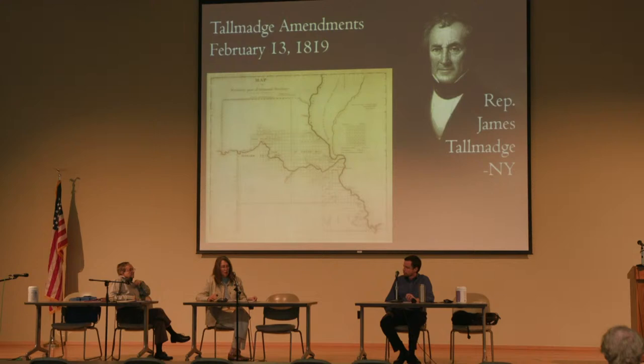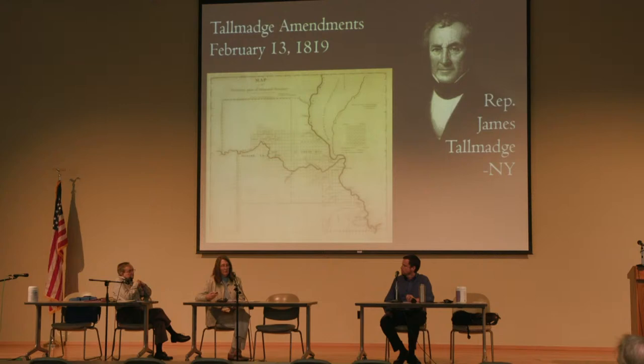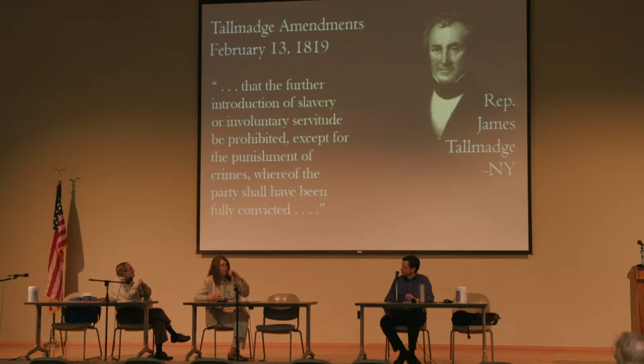Talmadge is the one who really throws a wrench into what had been up to this point a relatively simple process for a state to come into the Union. This map shows Missouri just prior to statehood, probably around 1816 or 1817. When Missouri's request came to Congress, Congress had to give its approval for an enabling act to allow a state to create a state government and form a state constitution. So Talmadge put forward two amendments — sometimes referred to as one, sometimes two — known as the Talmadge Amendments.